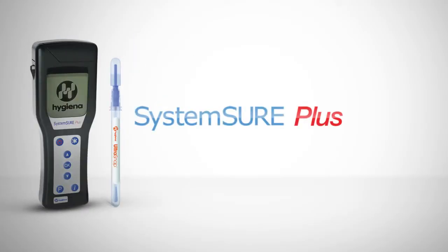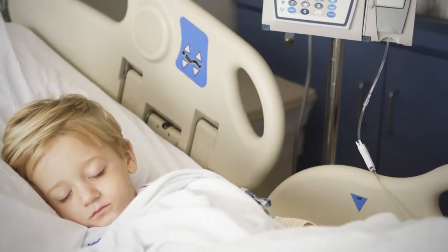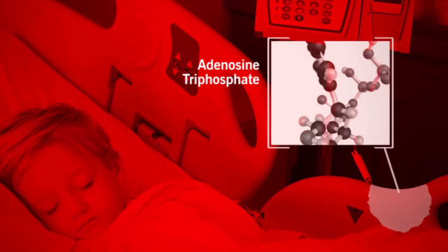The ATP Cleaning Verification System is made up of two components: the SystemSure Plus Luminometer and UltraSnap Test Device. Together, UltraSnap and the SystemSure Plus measure the ATP present on a surface.